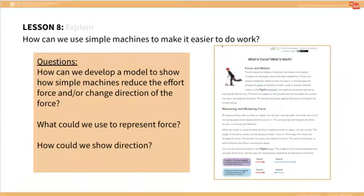In the Explain portion of this lesson, students will refer back to the reading they did in Lesson 6 that covers Simple Machines, Force, and Work. Discuss these question prompts with students. At this point, they should respond that they can use arrows, change the size of the arrow, change the direction of the arrow to show changes in force.